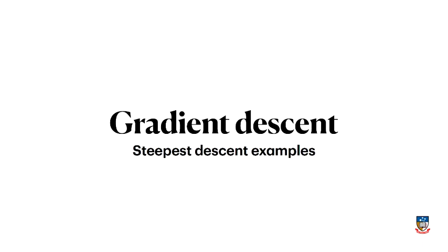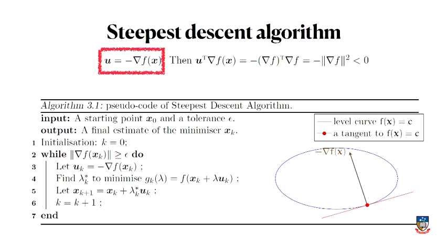We've talked a little bit about gradient descent, and in this video, I'm going to give a few examples of how it actually works in practice. Remember the steepest descent algorithm looks like this idea. The big idea is that you choose a descent direction that sits in the direction of the negative gradient of your function.